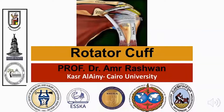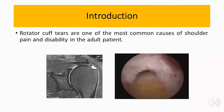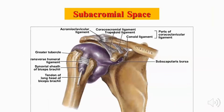The rotator cuff is one of the most common causes of shoulder pain and disability in older patients. We shall know what the subacromial space is — it is the area bounded between the humeral head below and the coracoacromial arch, the undersurface of the acromion, and the AC joint above.